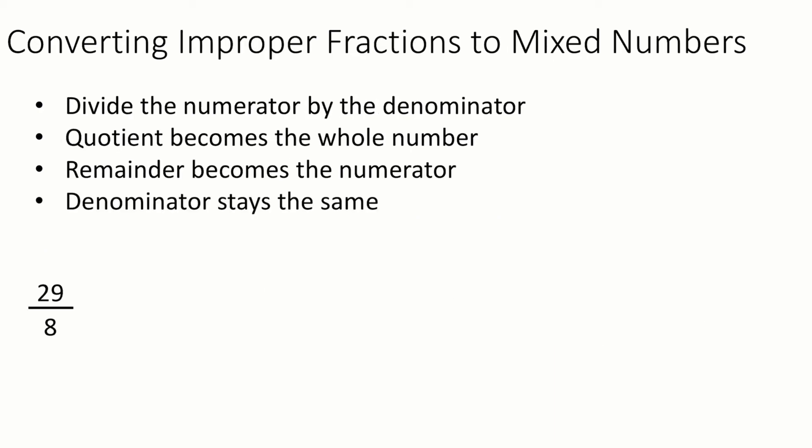Now, to go the other way around, if you're going from an improper fraction to a mixed number, we have to use a different process. So the first thing we want to do is divide the 29 by the 8. So there's a couple of ways to do this.